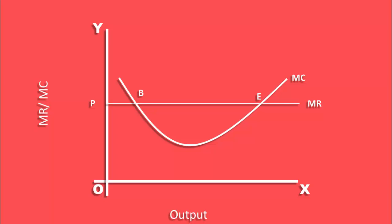That is, at the point of equilibrium, marginal cost must be increasing. Hence, our conclusion is the firm is in equilibrium at point E. Its equilibrium output is N. Equilibrium price is P.